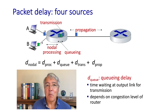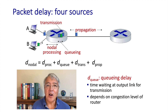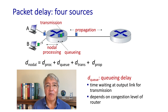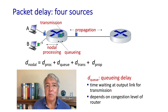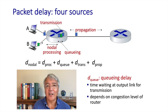The second component of delay is the queuing delay that we saw in the previous section. This is the amount of time that a packet has to wait in a queue at an output link for transmission. The amount of time spent queuing and waiting for transmission is going to depend on the congestion level for the outgoing link.